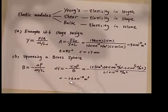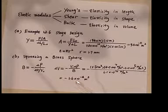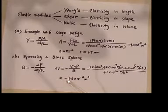1.6 times 10 to the negative 4 cubic meters. Negative sign means that the volume decreases, delta V.